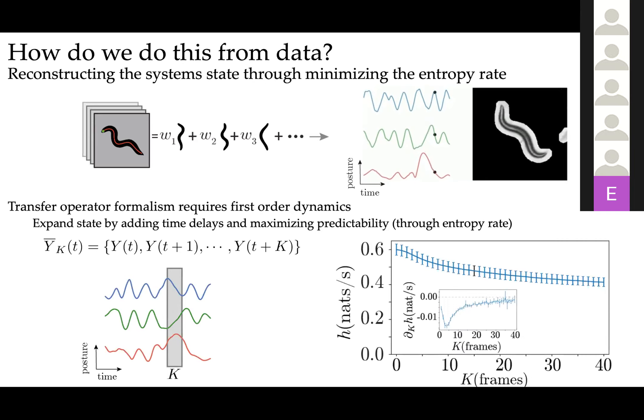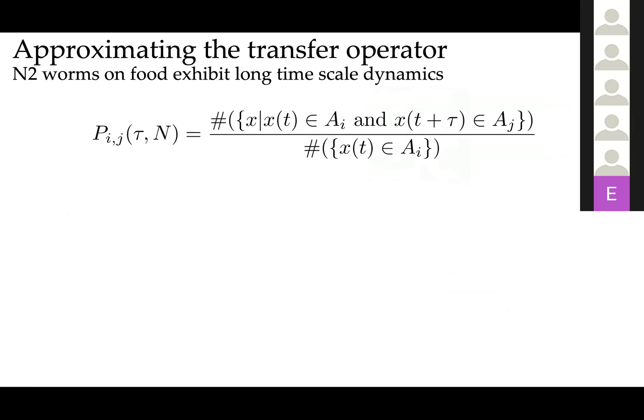If we apply this to a collection of timeseries coming from worms, what we find is that as we add delays to our definition of state—so as we increase the state space dimension—the entropy rate or the unpredictability of the system drops. In this case we're going to work with a number of delays of 15 frames, which is about half a second, which is about half a body wave for the worm dynamics.